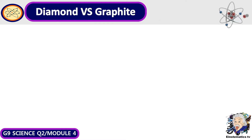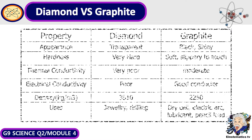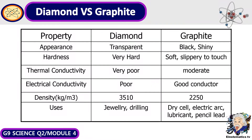Here's a quick comparison of the physical properties of diamond and graphite. In terms of appearance, diamond is transparent while graphite is black and shiny. In terms of hardness, diamond is very hard while graphite is soft and slippery to touch. In terms of thermal conductivity, diamond has very poor conductivity while graphite is moderate. In terms of electrical conductivity, diamond is poor while graphite is a good conductor.